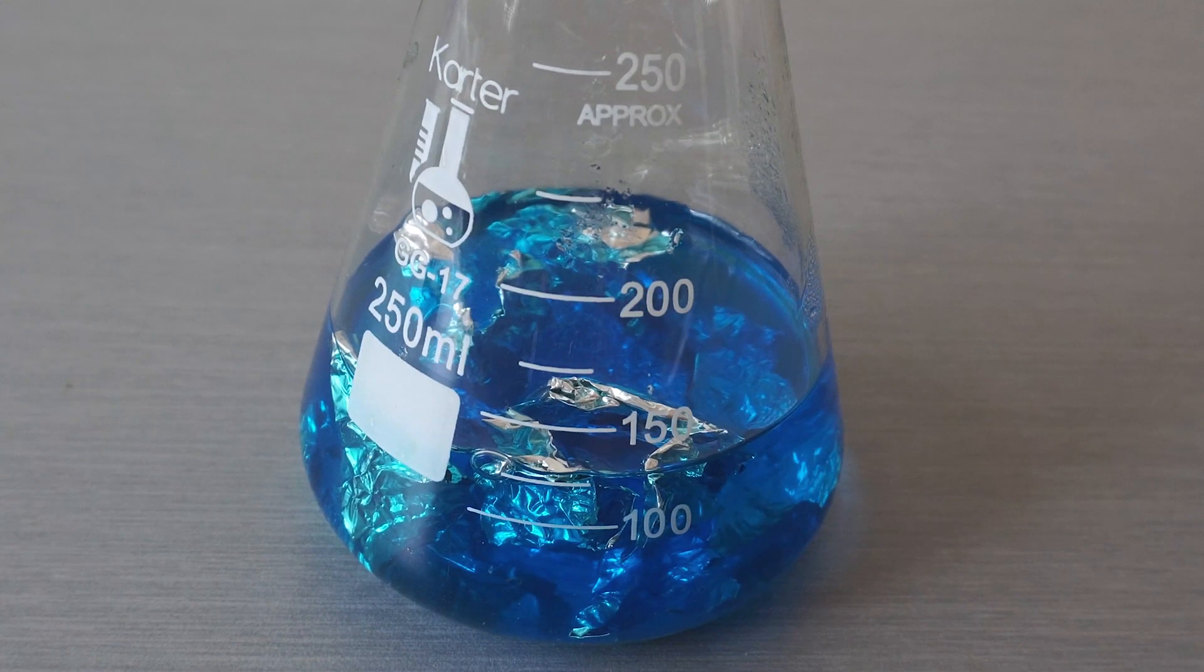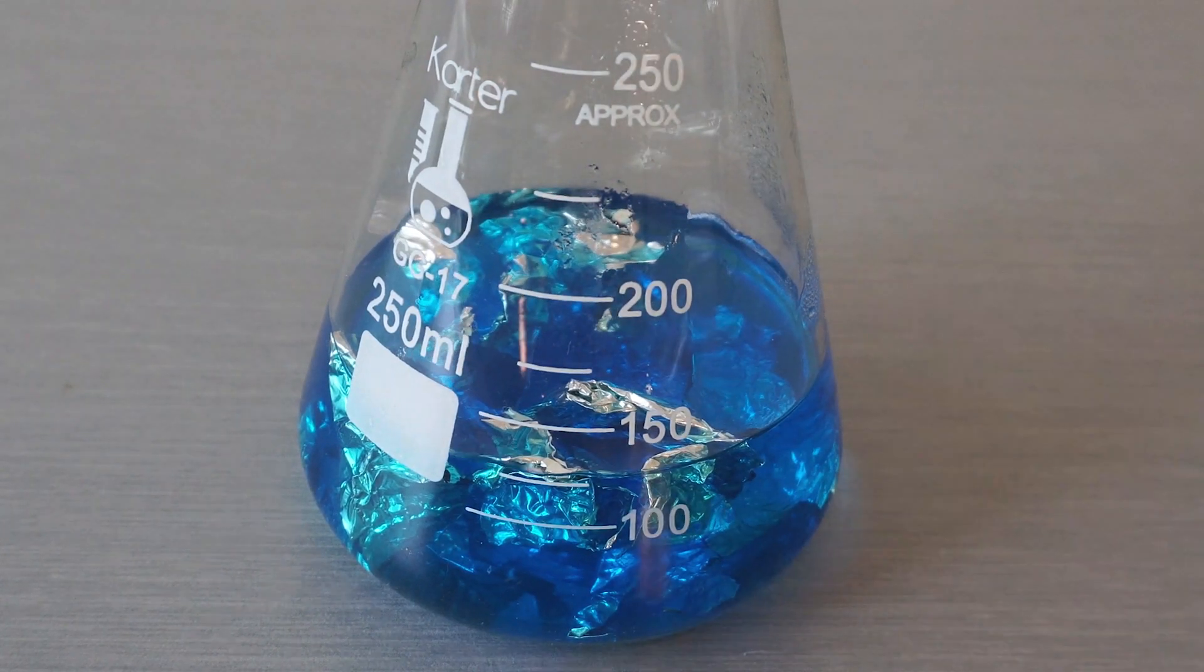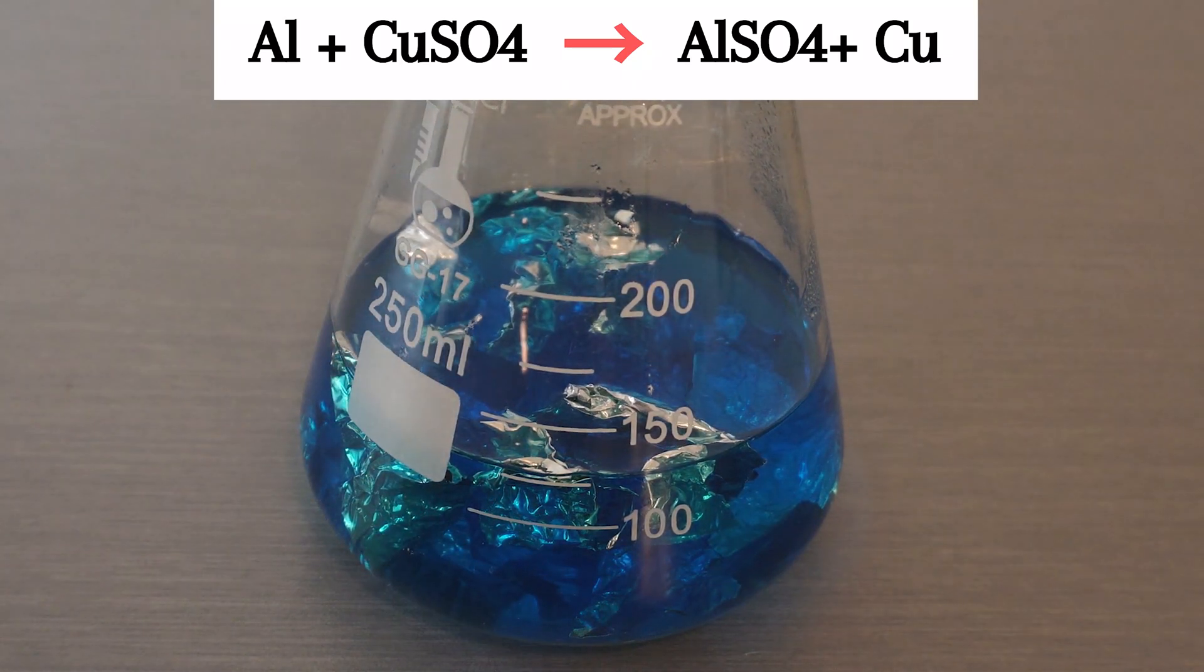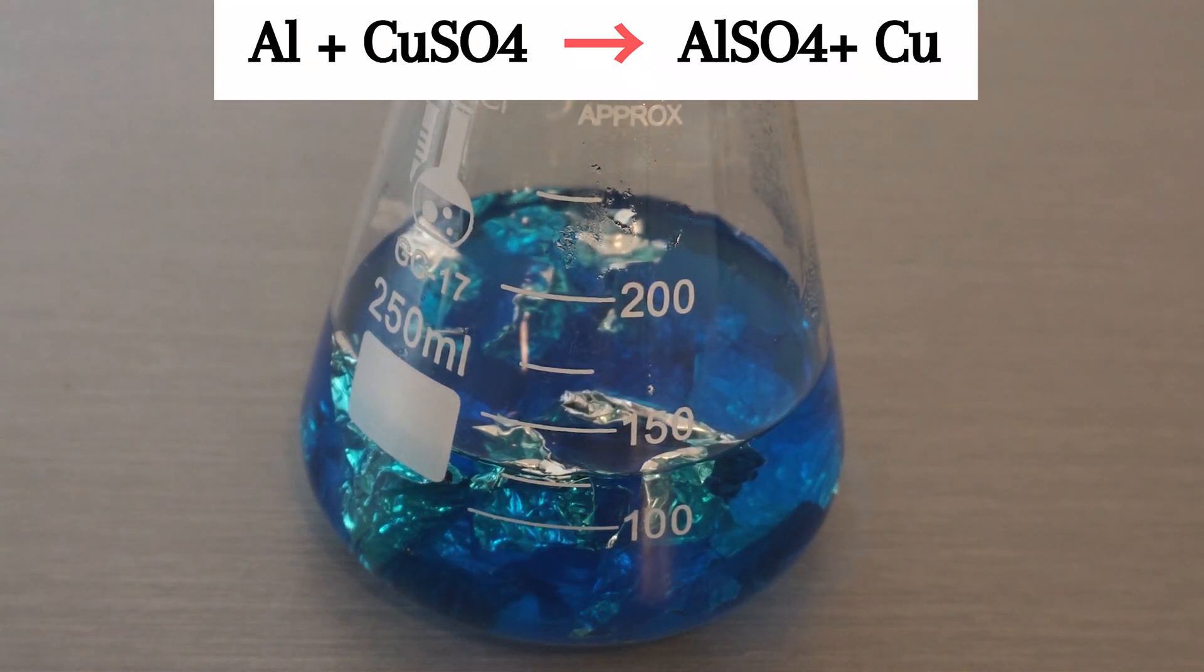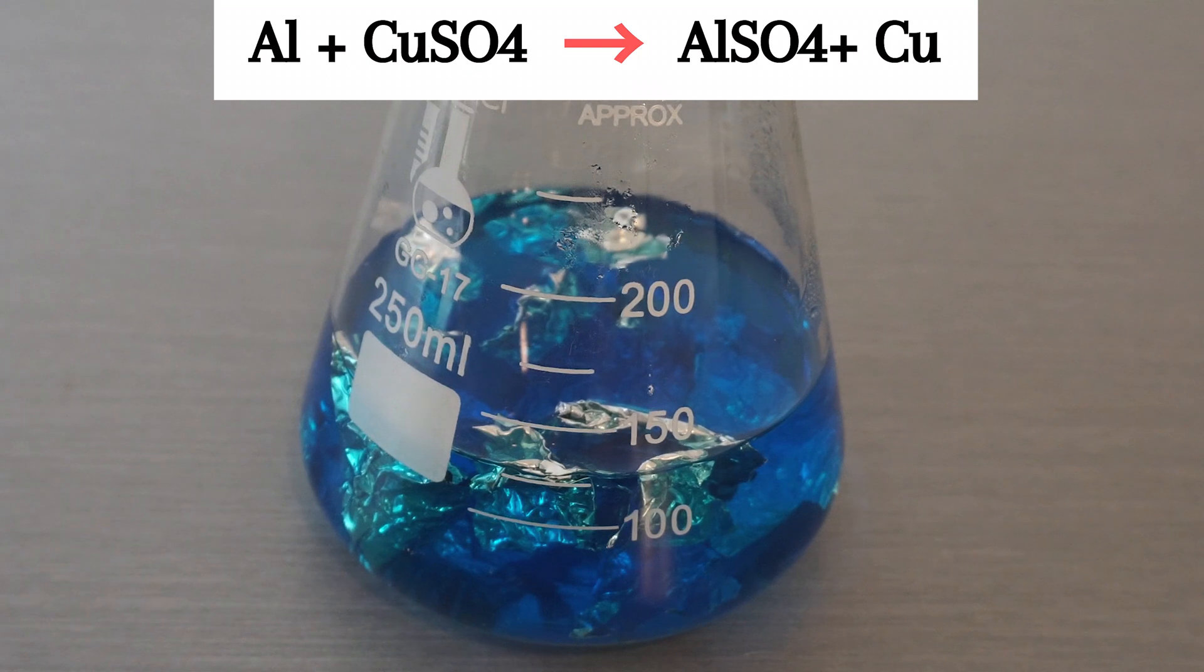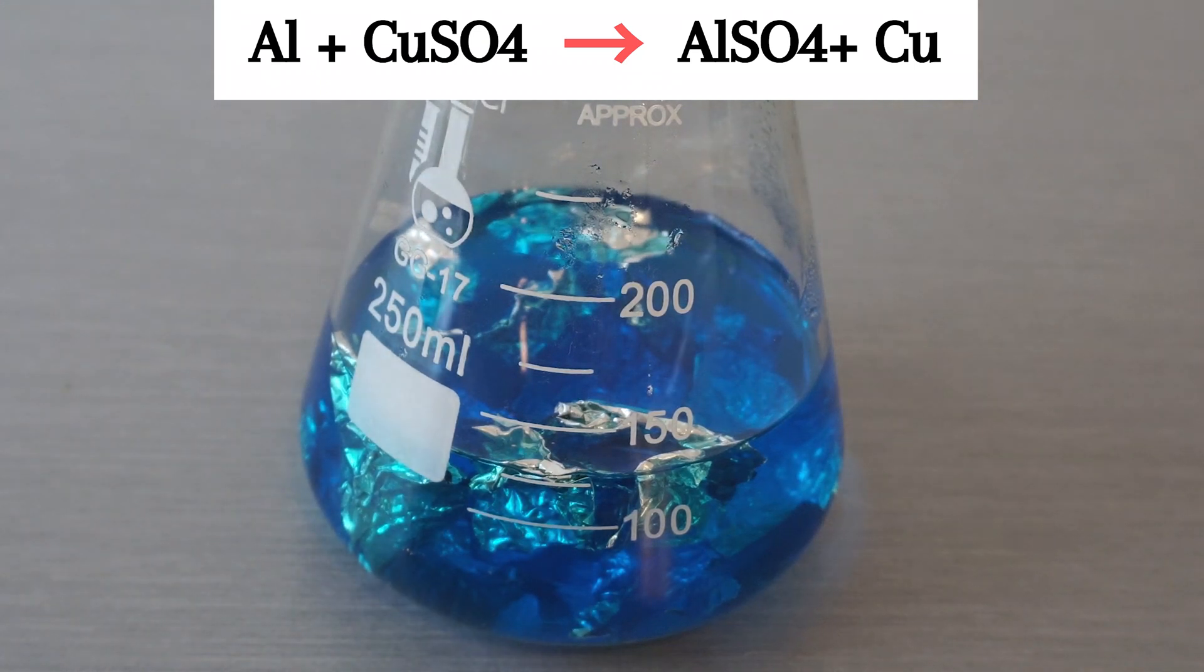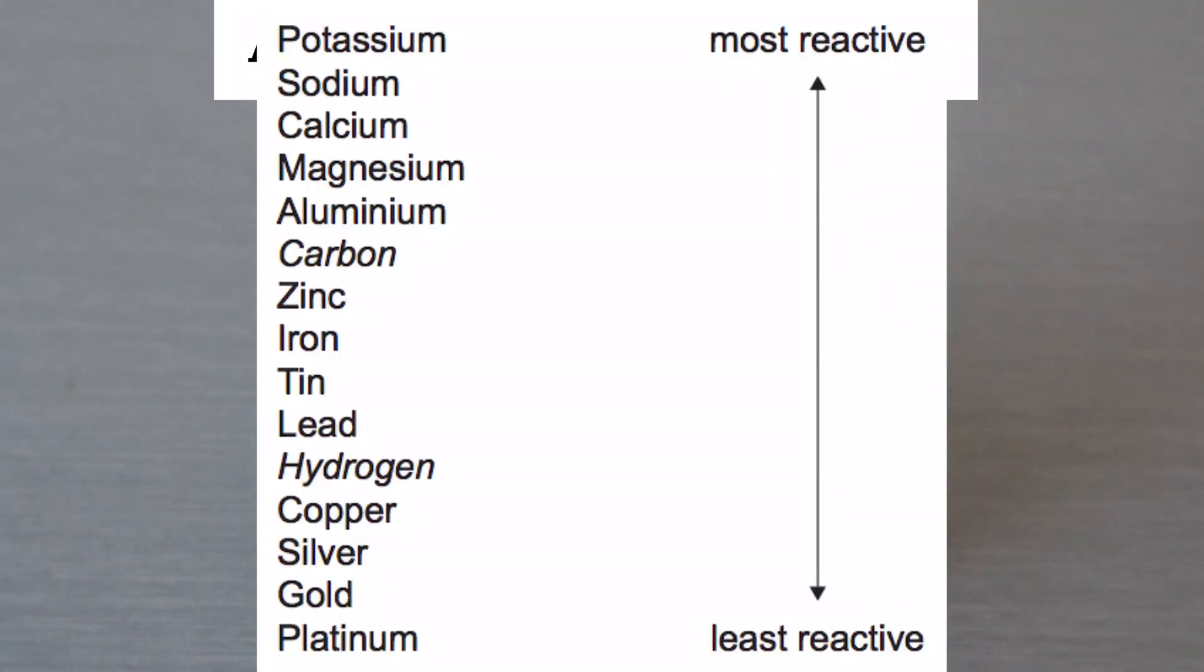The equation for what we're doing here is pretty simple. When we add our aluminum to the copper sulfate, the CuSO4, it will have a single displacement, and the aluminum will displace the copper from the solution, giving us aluminum sulfate and copper at the end. We know aluminum to be more reactive than copper by the reactive series of metals. More reactive metals will always displace the less reactive metal.